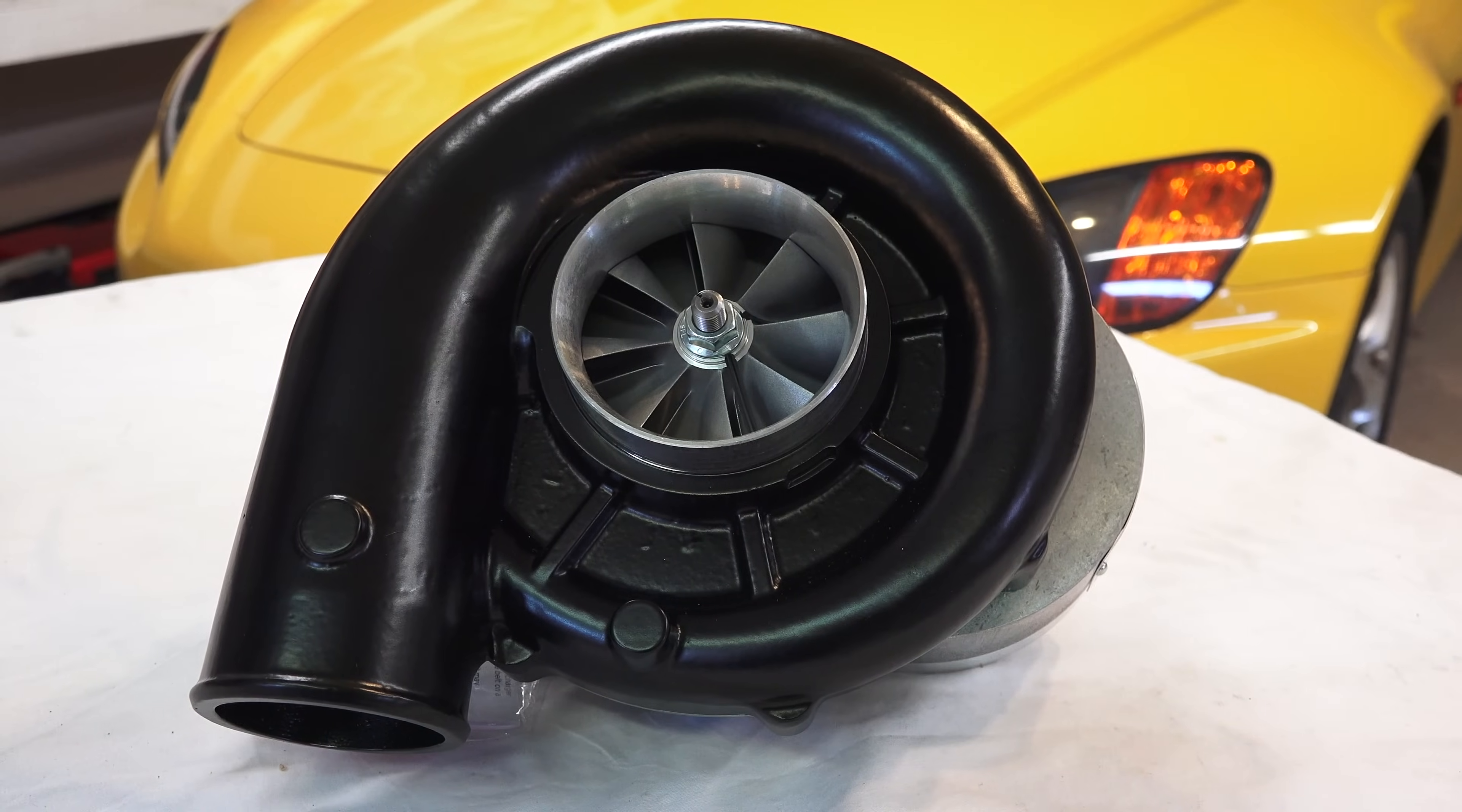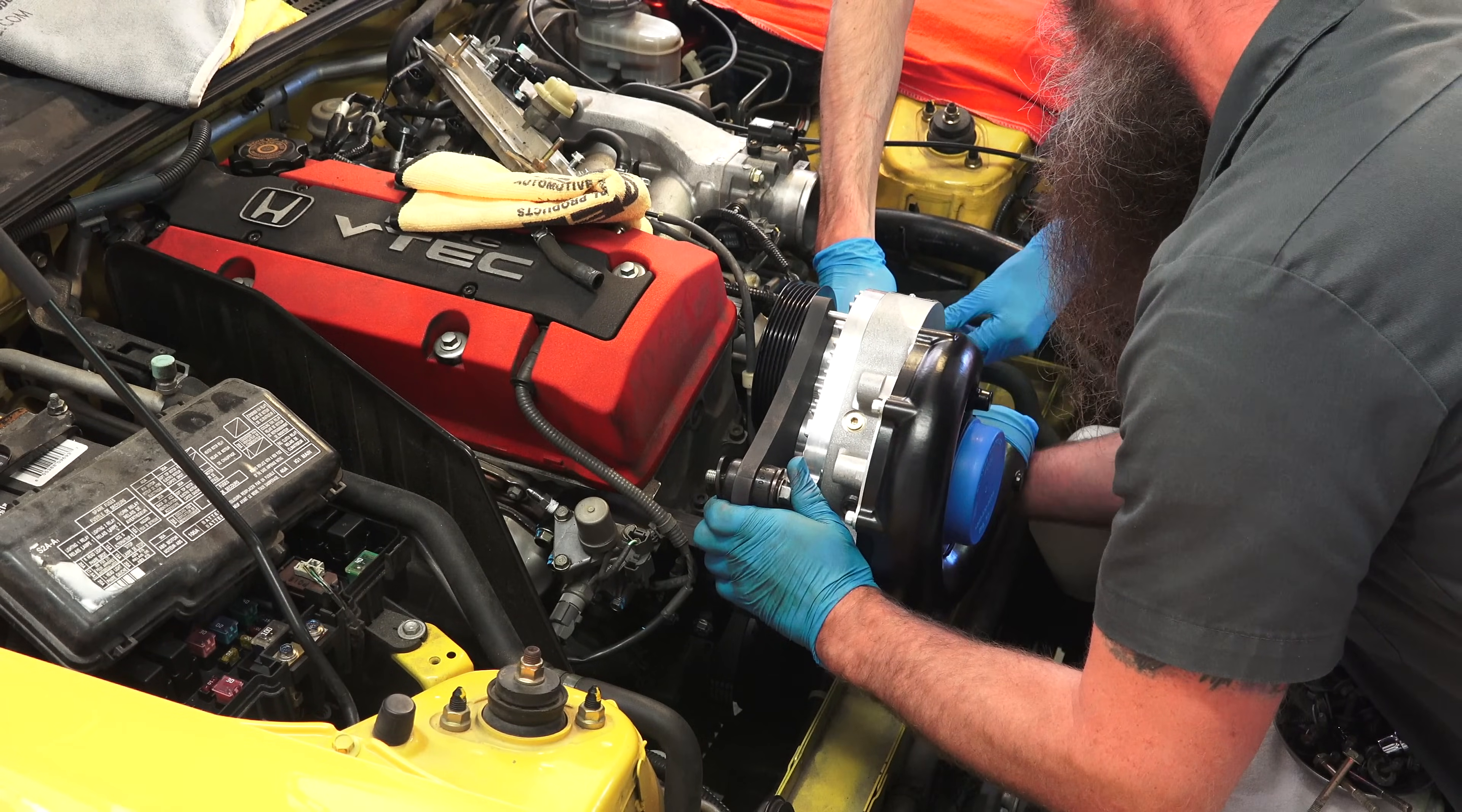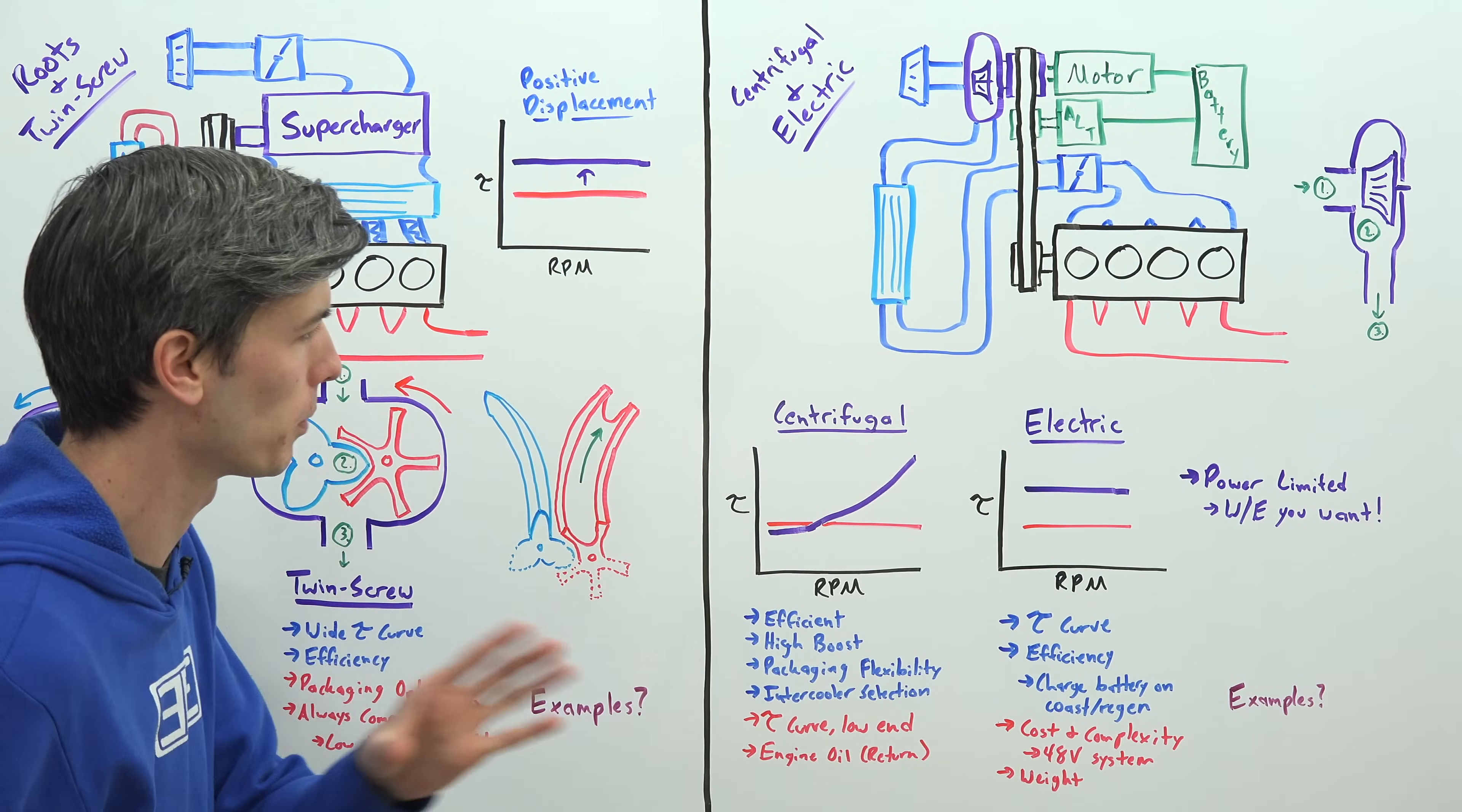Now as a visual example, a centrifugal supercharger is what I installed on my Honda S2000. And the setup is pretty simple - you have a crank belt rotate the impeller which pulls in the air. It passes through an air to water intercooler and then into the intake manifold. Now unlike the roots and twin screw style superchargers, these are not positive displacement pumps.